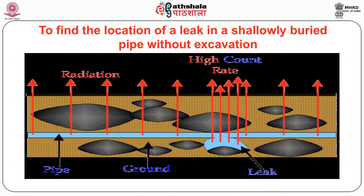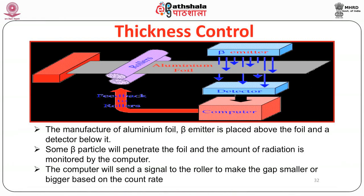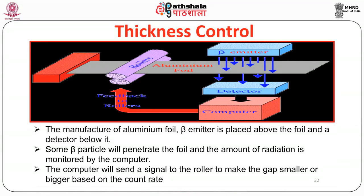To control the thickness of manufactured materials — for example, aluminium foil — a beta emitter is placed on one side, emitting radiation that passes through the foil to a detector connected to a computer. The computer detects any change in thickness and feeds back to the roller, which then maintains the correct thickness.